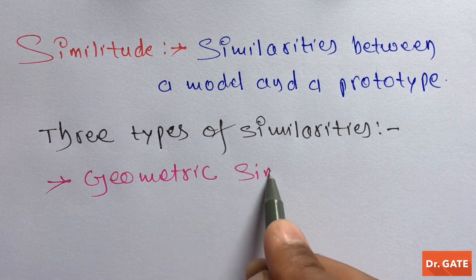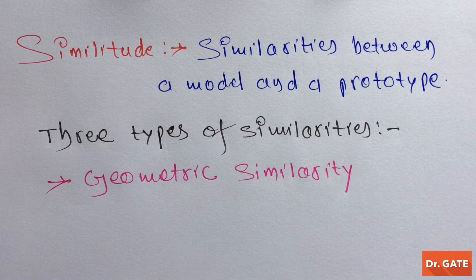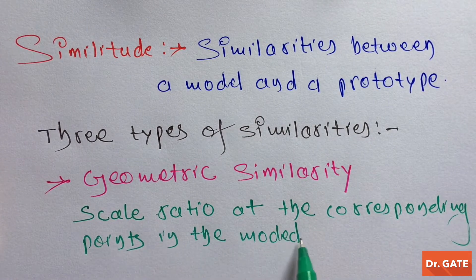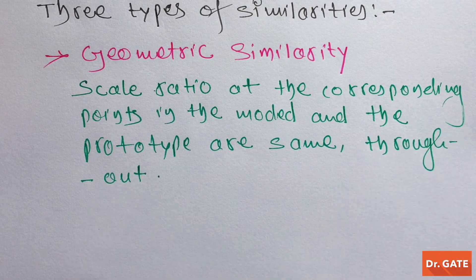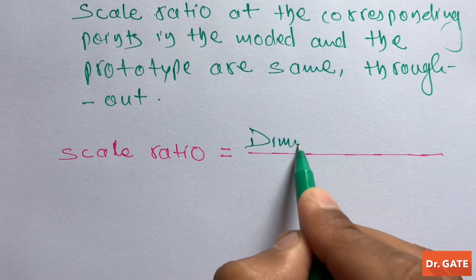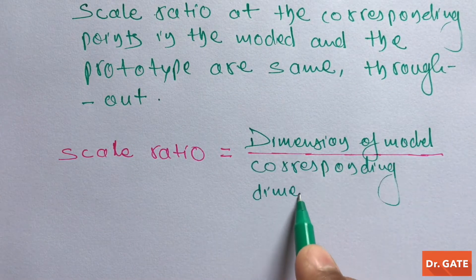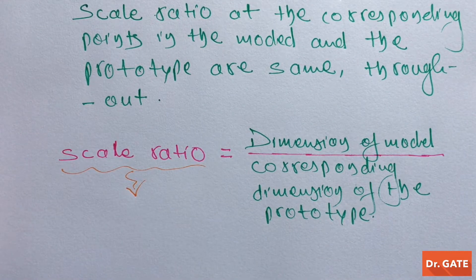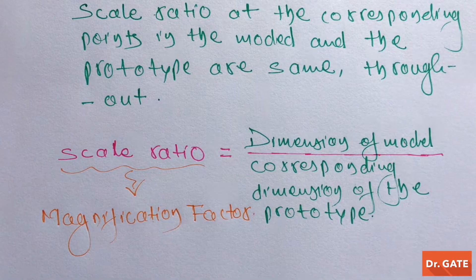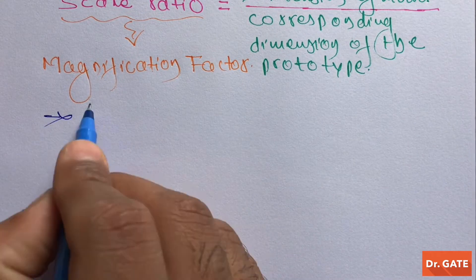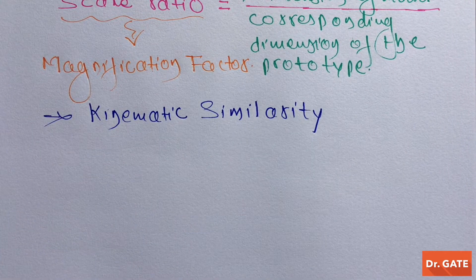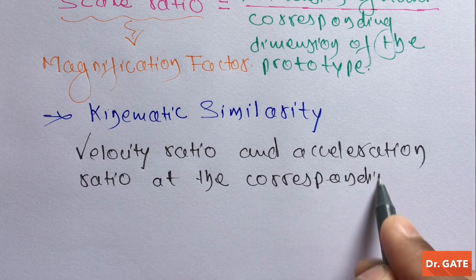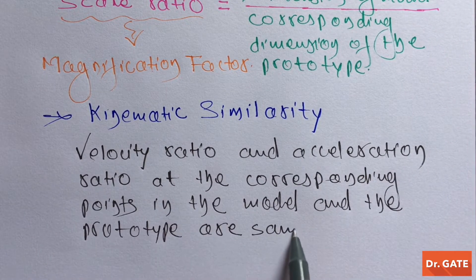The first one is geometric similarity. To have geometric similarity between a model and a prototype, the scale ratio at the corresponding points in the model and the prototype are the same throughout. The scale ratio is the ratio of the dimension of the model to the corresponding dimension of the prototype, also known as the magnification factor in physics. The second type is kinematic similarity. To have kinematic similarity, the velocity ratio and acceleration ratio at corresponding points in the model and prototype are the same throughout.